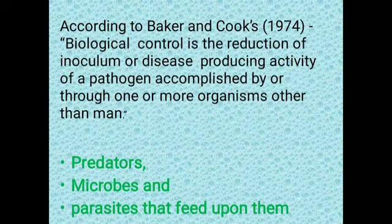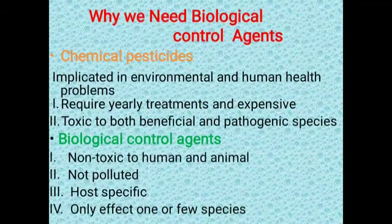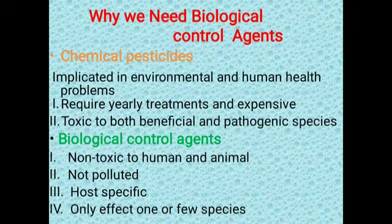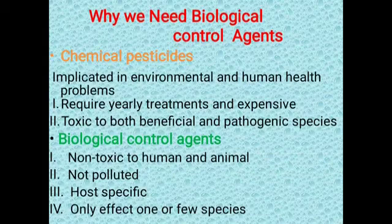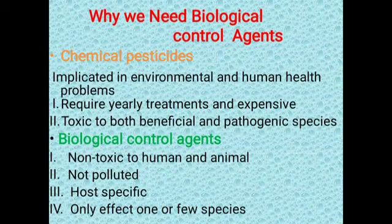Biocontrol may also include predators, microbes, and parasites that feed upon pathogens. Now, why do we need biological control agents? Because if we use chemical pesticides, they cause hazards and ill effects on the environment and human health. Chemical pesticides are also toxic to beneficial species — they kill not only harmful pathogens but also beneficial microorganisms present in soil.